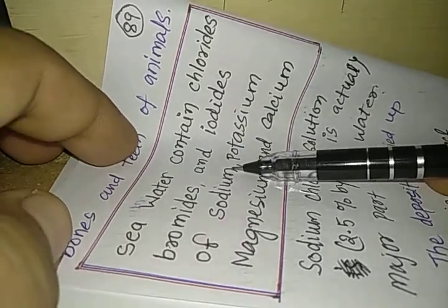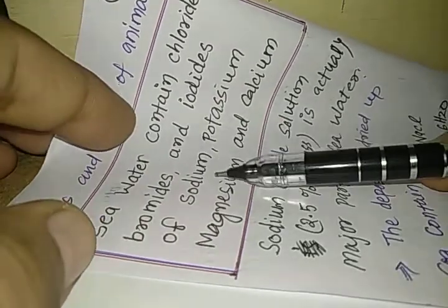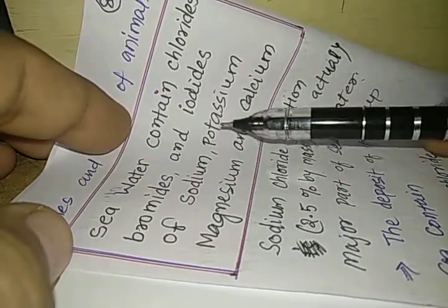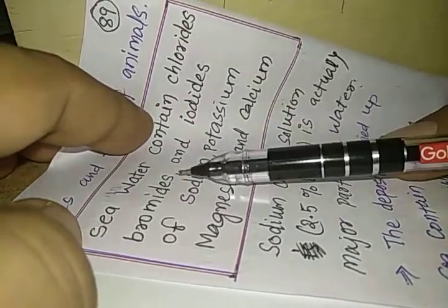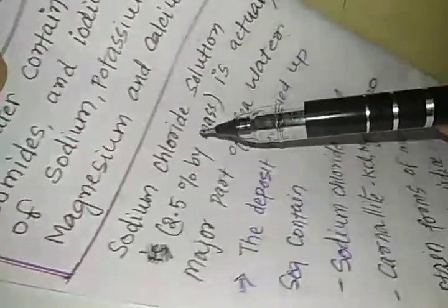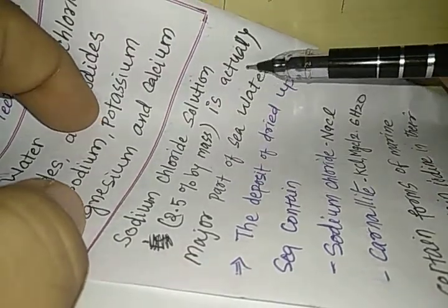They have a very high lattice energy. Sodium, potassium, magnesium, and calcium salts of chlorine, bromine, and iodine are mostly found in sea water. Sodium chloride solution, 2.5% by mass, is actually the major part of sea water.